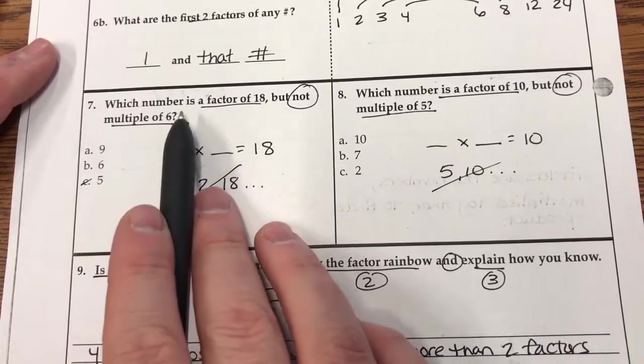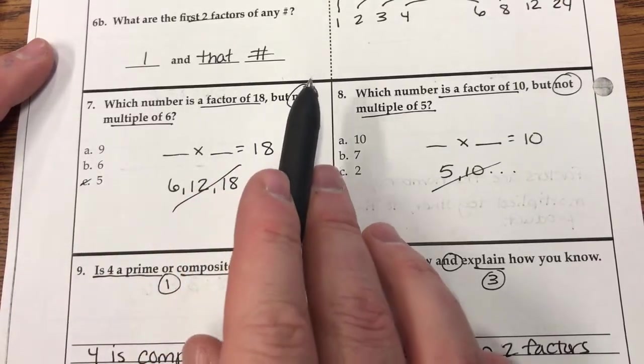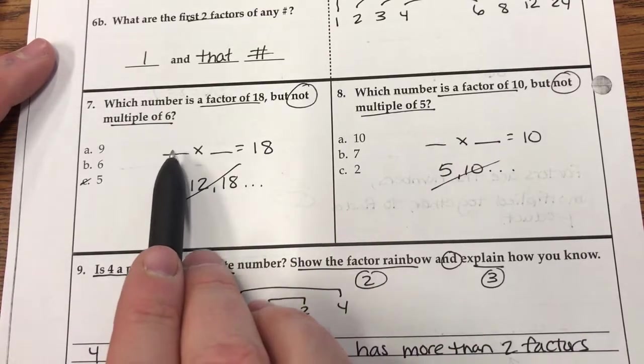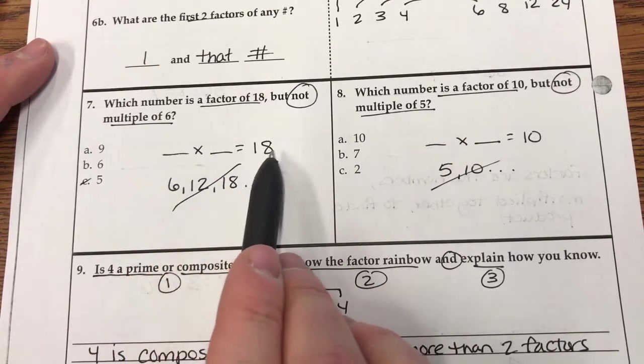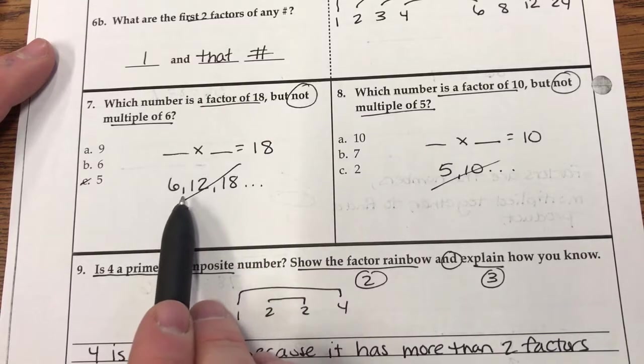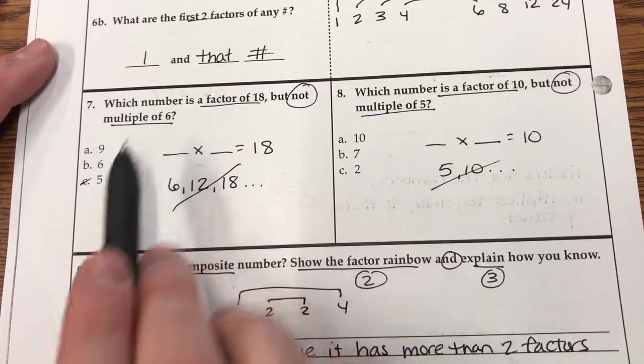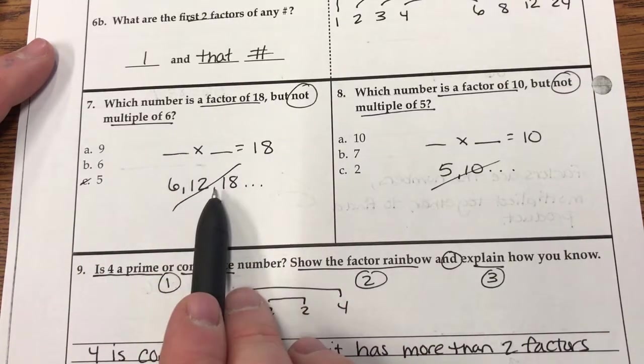Number 7, which number is a factor of 18 but not a multiple of 6? So I'm thinking, okay, what are factors? Numbers that multiply together to make 18. What are multiples? 6, 12, and 18. Counting by the number 6. So this is just my notes.